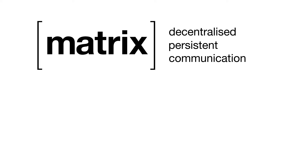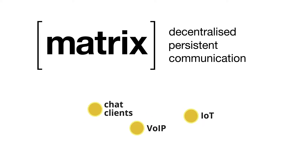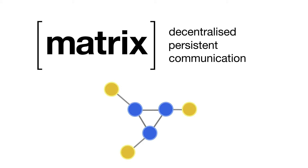You can use Matrix for decentralized group chat, VoIP signaling, Internet of Things data transfer, or just about anywhere you need a common data fabric to link together fragmented silos of communication.